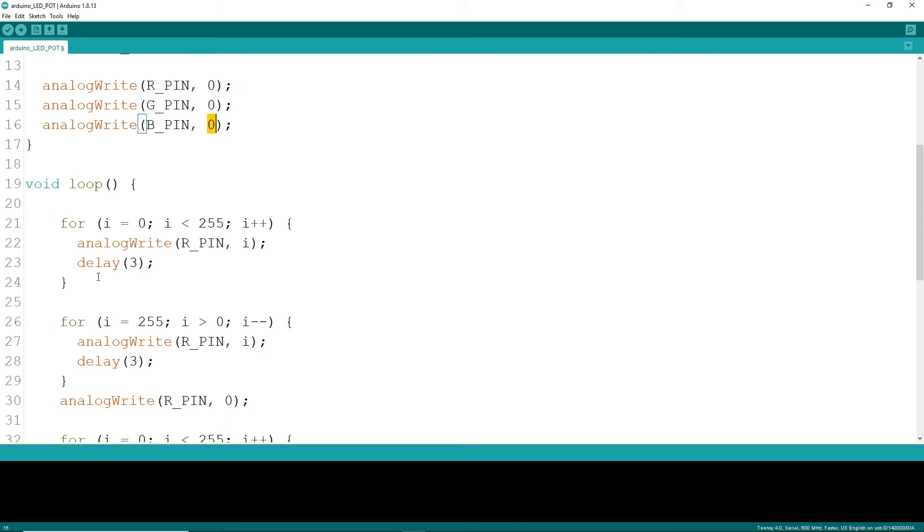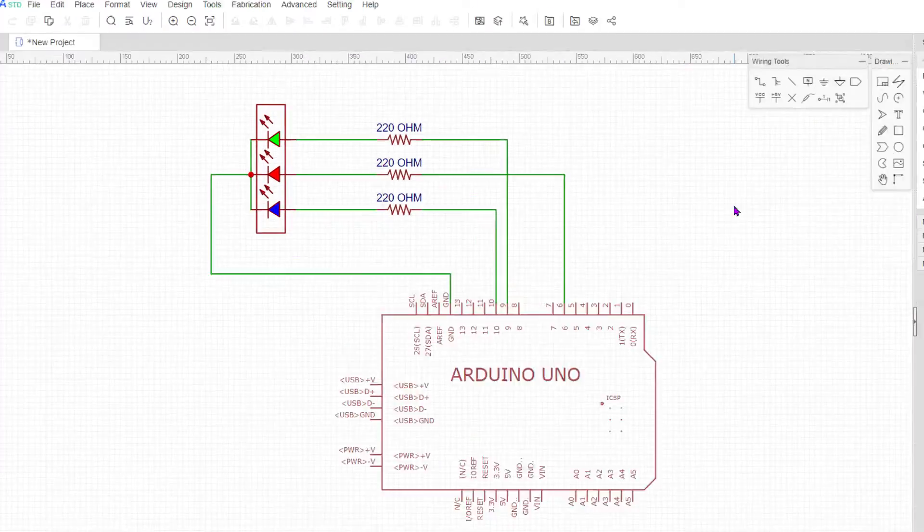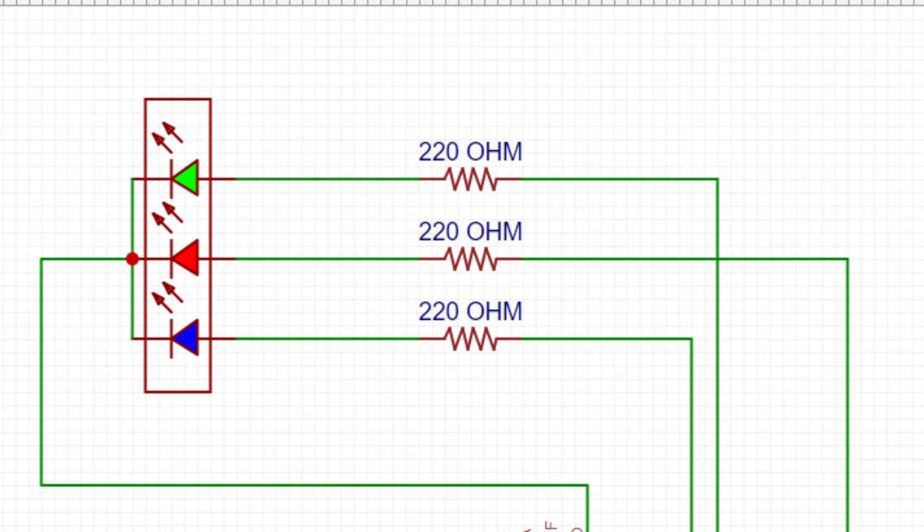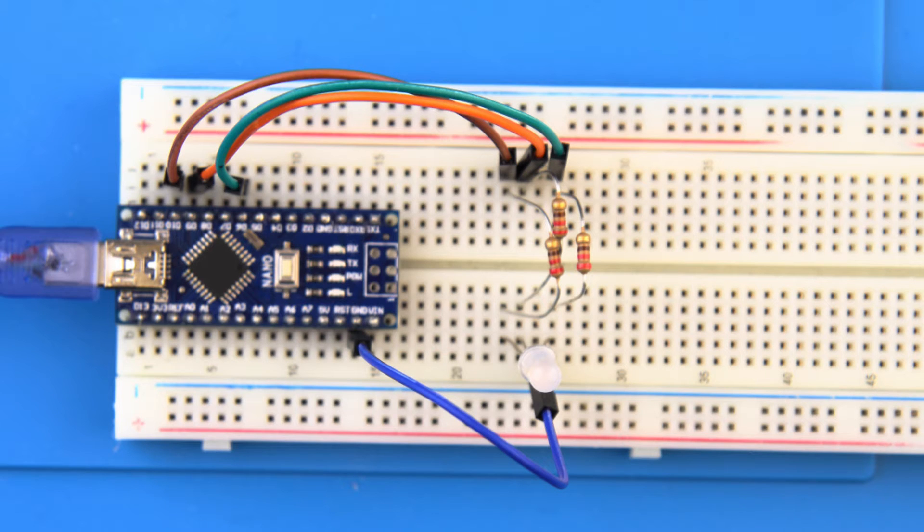Wiring up the LED is pretty easy. We'll connect each of the leads to a digital pin that supports PWM generation. Also, since LEDs don't like 5 volts, we'll wire in a series resistor. A 220 ohm will drop the voltage just enough to keep it from burning out. Ground, of course, goes to ground.